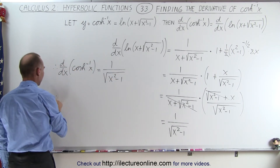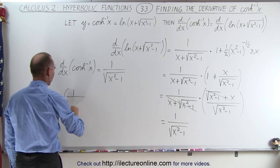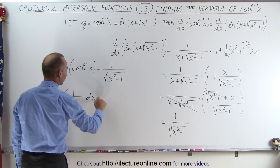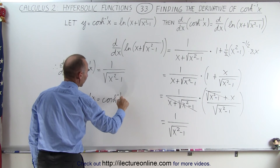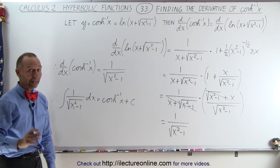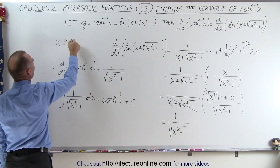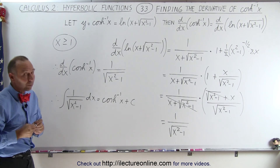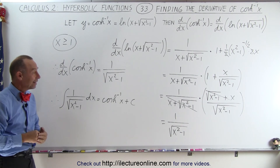Therefore, we can also conclude that the integral of 1 over the square root of x squared minus 1 dx is equal to the inverse hyperbolic cosine of x plus a constant of integration, realizing of course that x takes on values greater than or equal to 1, as that is a requirement for the inverse hyperbolic cosine. And that's how it's done.